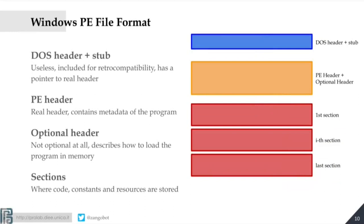Every executable in Windows has this structure: you have some headers. There's the DOS header, which is basically kept for backward compatibility and is useless. For every person with a Windows machine: be aware that there are around 200 bytes that are completely useless, and these 200 bytes are stored in each executable of your machine. If you run one of these programs inside a DOS machine, it says 'this is not a DOS program' and halts execution.